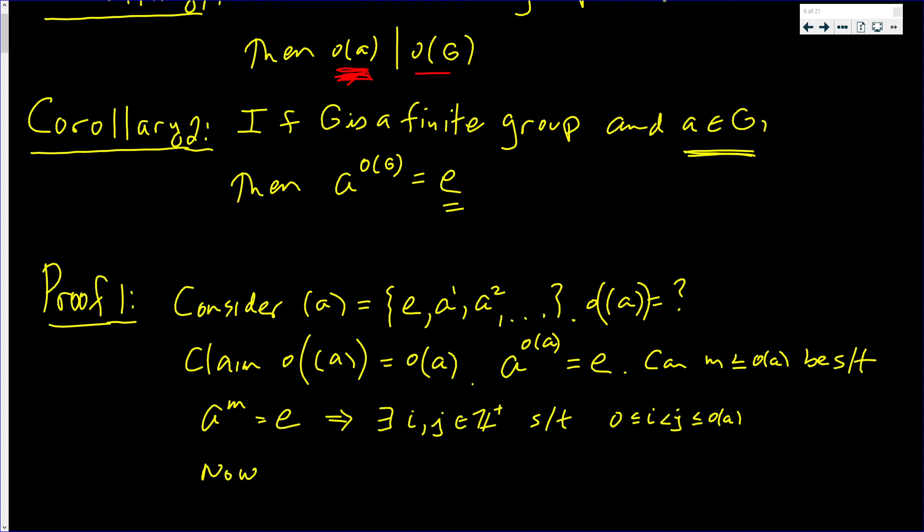Now A to the I equals A to the J. But what does that imply? J is bigger. That implies E is equal to A to the J minus I, where J minus I is less than the order of A. But that's the contradiction.